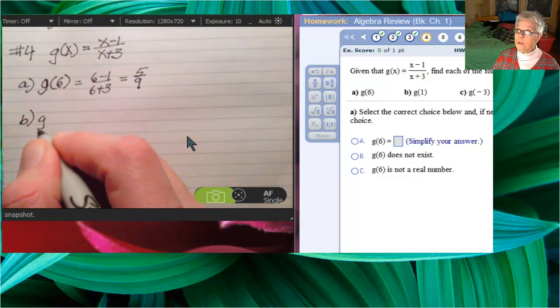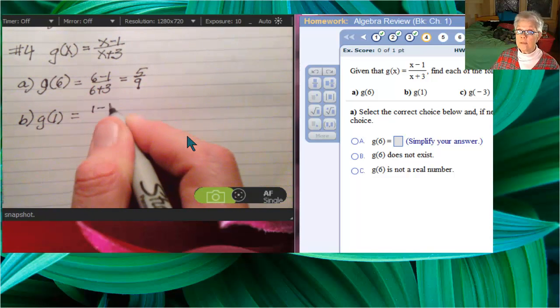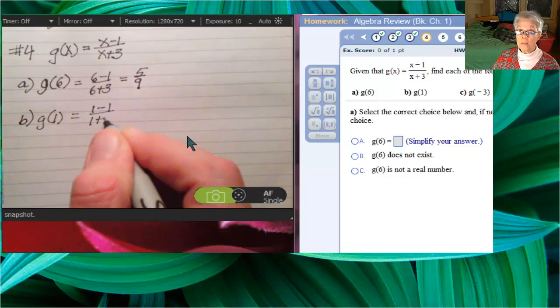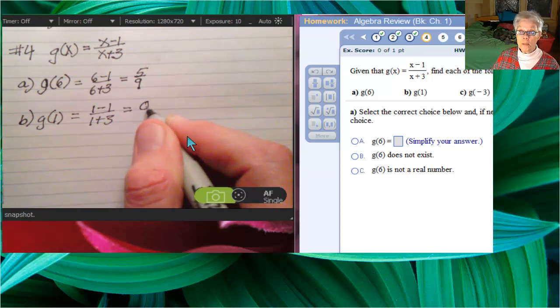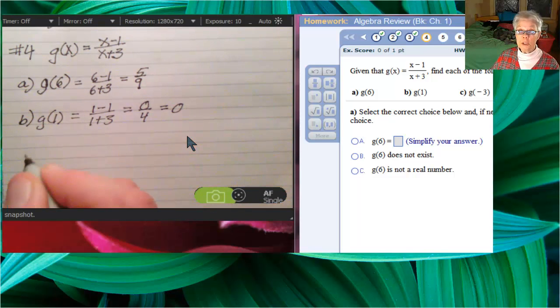In b, we'll find g of 1, so we're going to substitute 1 for every x. We'll have 1 minus 1 over 1 plus 3. That will be 0 over 4, which is 0.